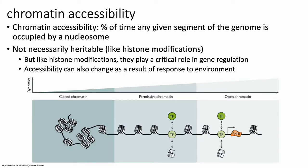Next, we'll talk a little bit about chromatin accessibility and how that relates to epigenetic regulation. Chromatin accessibility could be formally defined as the percent of time that a given piece of the genome is being occupied by a nucleosome. Just like histone modifications, it's not necessarily a heritable event, but chromatin accessibility really plays a critical role in gene regulation. It's important to note that chromatin accessibility is not really an on or off thing — there's a whole range of accessibility that a particular segment of the genome can undergo.